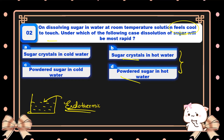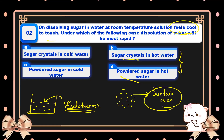Also, if you compare sugar crystals versus powdered sugar, dissolution is faster with powder because surface area increases. More surface area means more speed of dissolution. Option B is the correct answer.